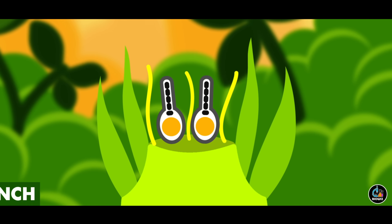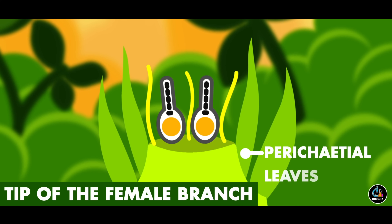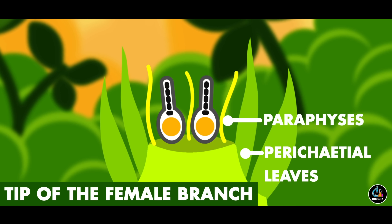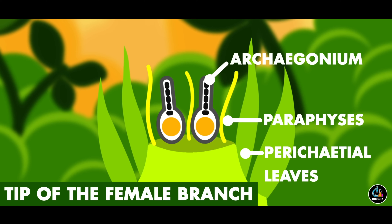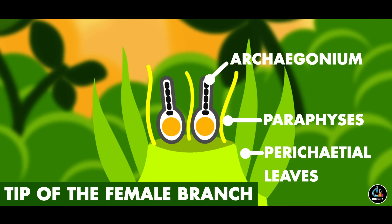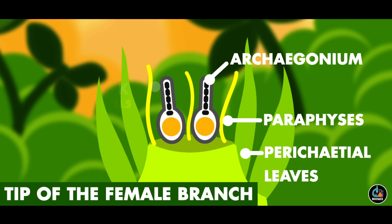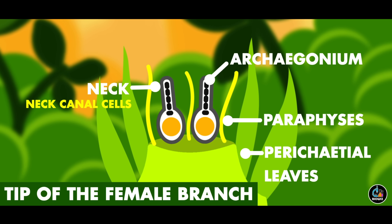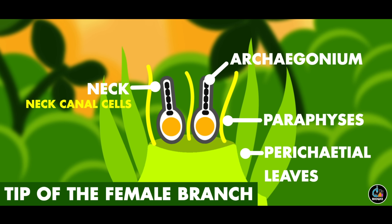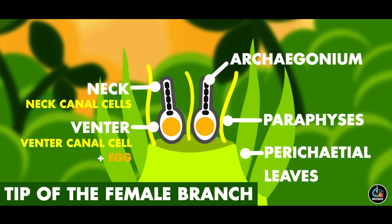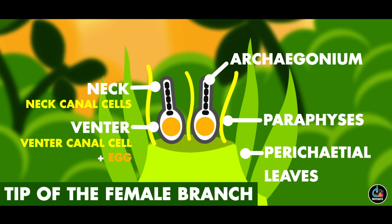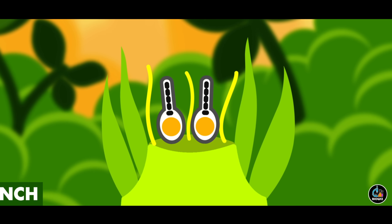The tip of the female branch is also surrounded by perichaetial leaves and also bears paraphyses to hold water for fertilization. Many female reproductive organs called archegonia are also present at the tip. The archegonia are also surrounded by sterile cells which form the jacket. The upper long and narrow part of the archegonium is called the neck and it contains six to ten neck canal cells. The swollen bottom part is called the venter, which contains a single venter canal cell and an egg cell.